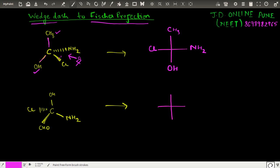So the central carbon, the carbon at the junction of a vertical and the horizontal line is a chiral carbon. Right? So in this way we are converting the wedge dash into a Fischer projection.